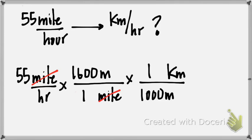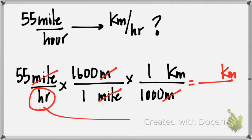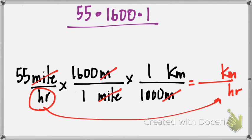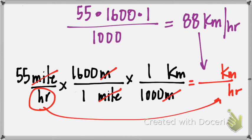So I double check. Miles cancel. Meters cancel. I'm left with kilometers. And now I can reinsert my time. So I'm left with just my numbers, and that's going to be 55 times 1,600 times 1, all over 1,000. Once I've run my numbers, that ends up being 88 kilometers per hour. And that is your last example for dimensional analysis. I hope this was helpful. Have a good night. Bye.